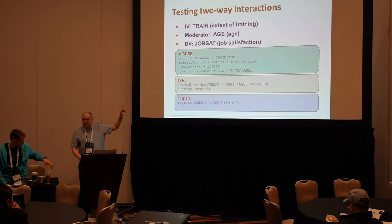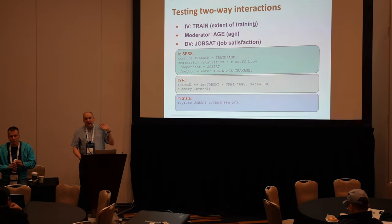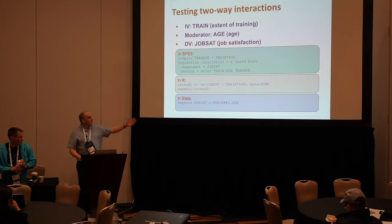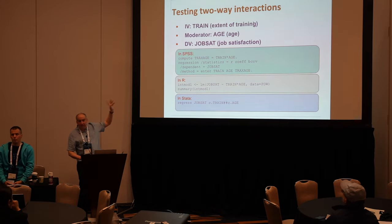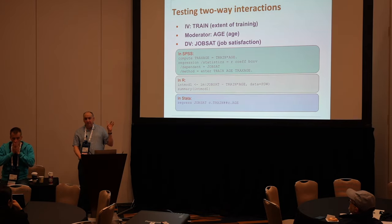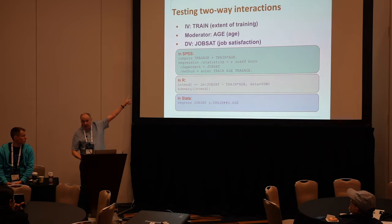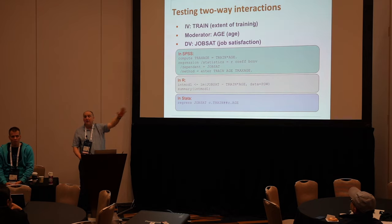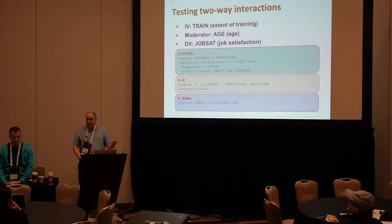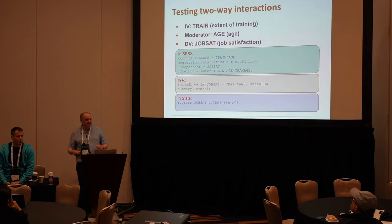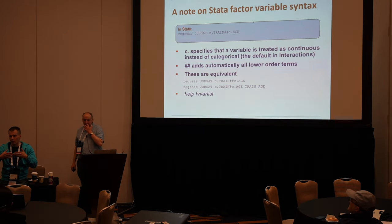Just worth coming back to the previous slides: if you're using R, the interaction is calculated as part of the linear modelling procedure by using the asterisk between the variables. If you're using SPSS, it doesn't do quite the same thing. If you're using the regression procedure, you actually have to calculate the interaction terms separately — that's what the first line is about. There are other procedures in SPSS, such as GLM, where it can do it as part of the procedure, but the way SPSS works is a little haphazard at times.